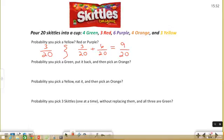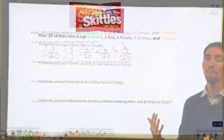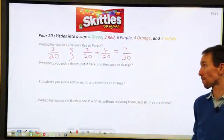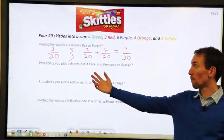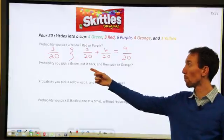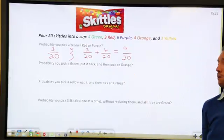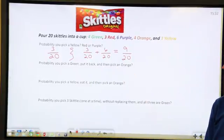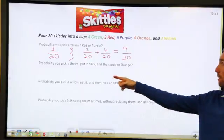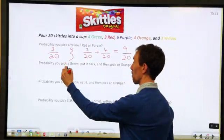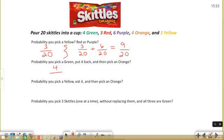All right, so let's look at some conditional probabilities where something happens and then we do something else. We're going to find the probability of picking a green Skittle. We're going to put it back and then we're going to pick an orange Skittle. We're going to find the probability of that happening. So the green Skittles, there are 4 out of 20. We're doing something and something else, so we're going to multiply together.